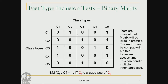Tests using the binary matrix are very efficient, but the matrix can be very large in practice. If the matrix is compacted to save space, accessing BM[ci, cj] is no longer a one-time lookup and access time increases. The major advantage of this matrix approach is that it can handle multiple inheritance as well, whereas searching the class hierarchy graph was much more difficult for multiple inheritance.